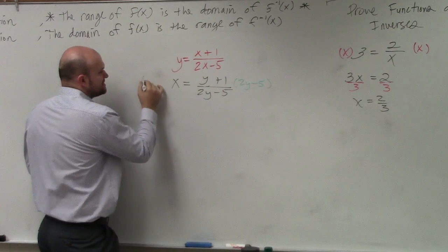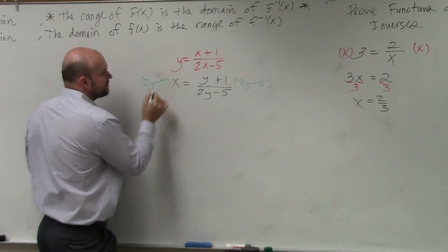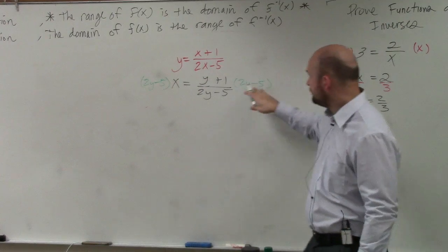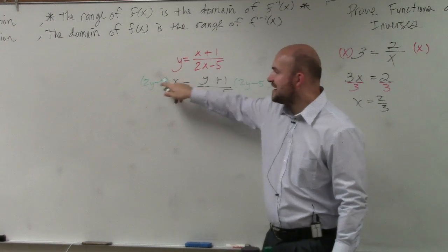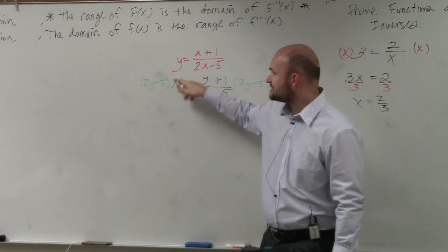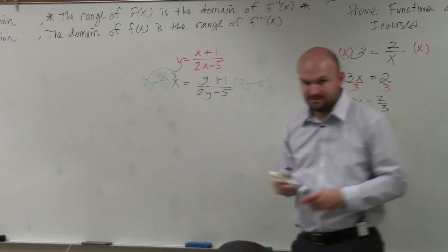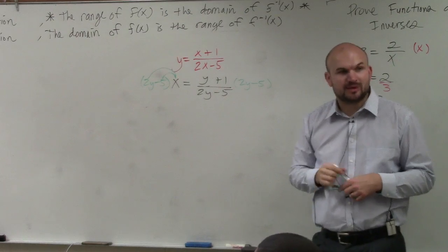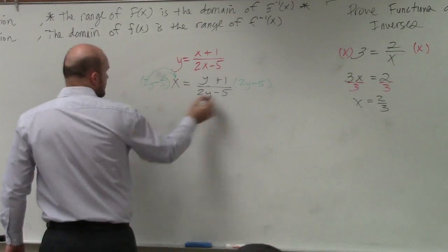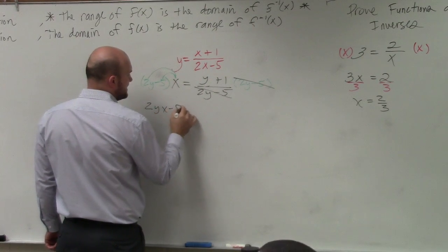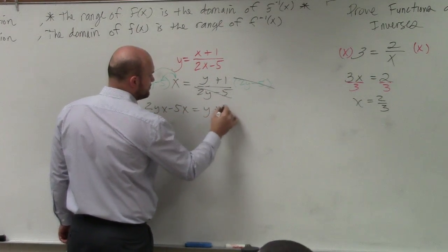You do that on both sides. Notice how I'm putting this in parentheses. I'm multiplying x by 2y minus 5. If you don't put parentheses, it's just x times 5. No, it's x times negative 5 and x times 2y. Right? So you've got to make sure you apply the distributive property. So those divide out to give me 1. Here, I'm left with 2yx minus 5x equals y plus 1.